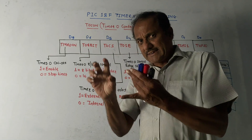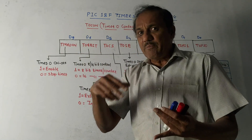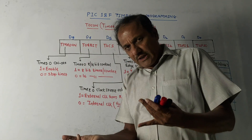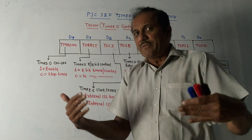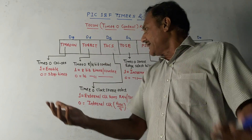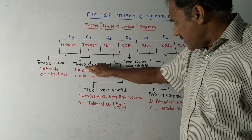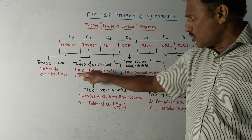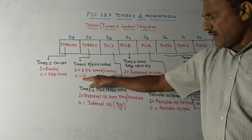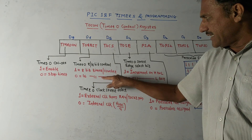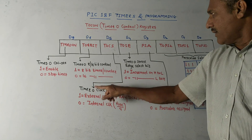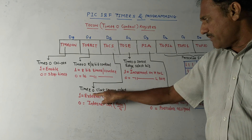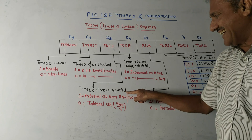In the case of Timer 0, you can use it as an 8-bit or 16-bit counter. The main use of this timer or counter is to provide delay. This bit decides whether you are using 8-bit or 16-bit: if it is 1 it is 8-bit, if it is 0 it is 16-bit timer or counter. The next bit is T0CS - Timer 0 Clock Source Select.